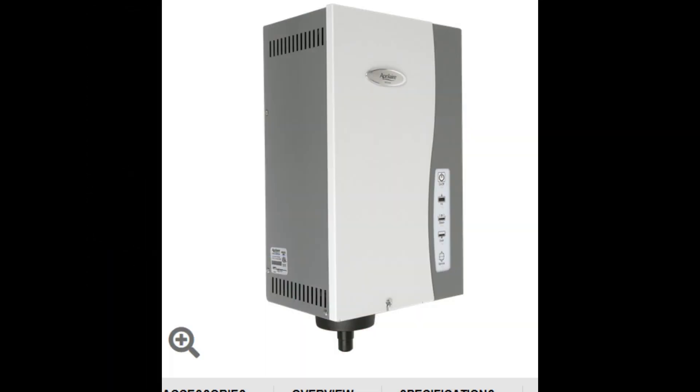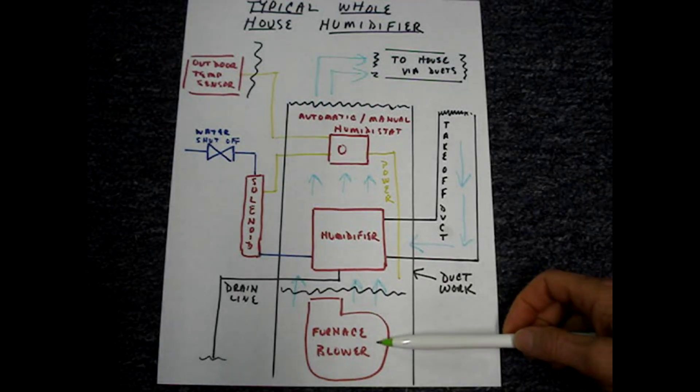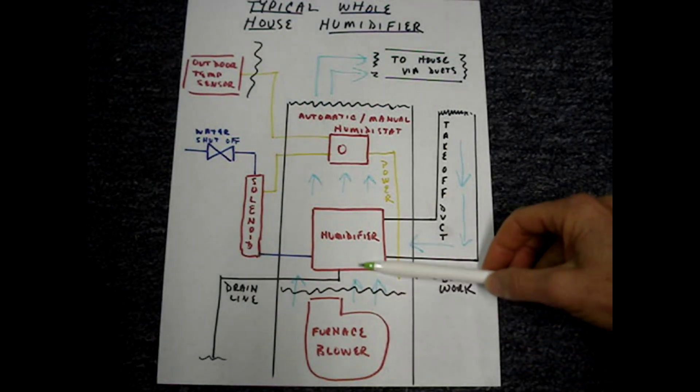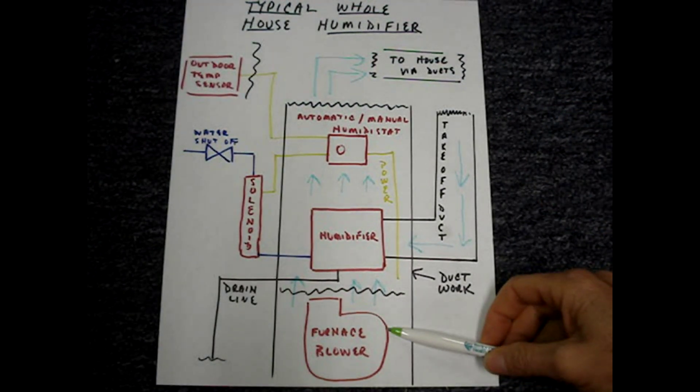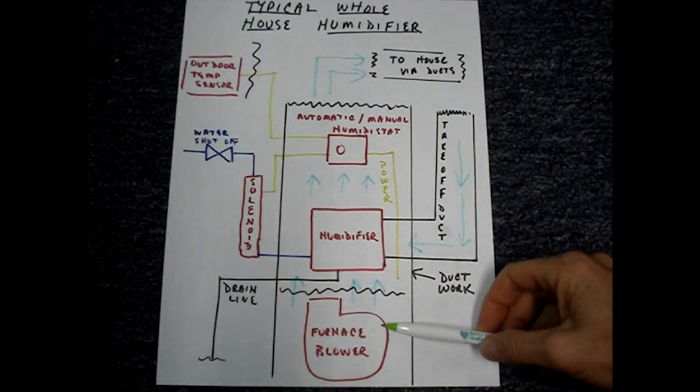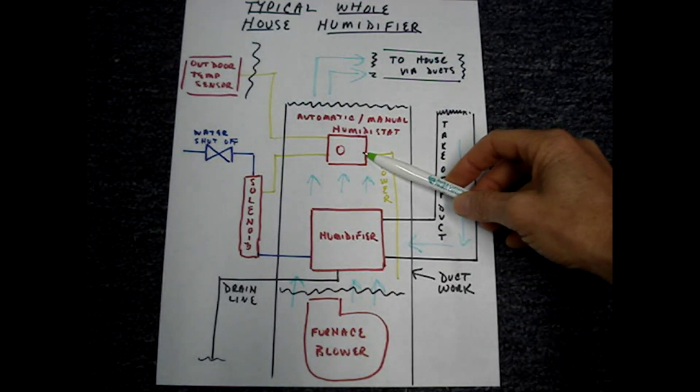Some whole house steam humidifiers don't need the furnace's blower to distribute the moist air. The furnace's blower has to be running to push the moist air throughout the ductwork. When the furnace is running, it sends power to the humidistat and turns it on.